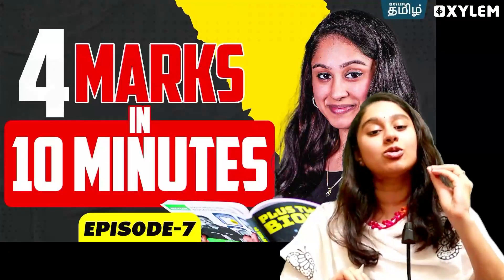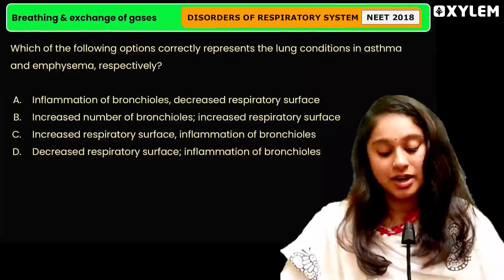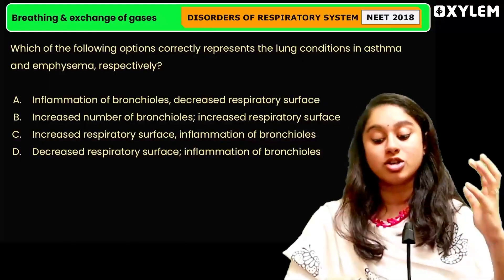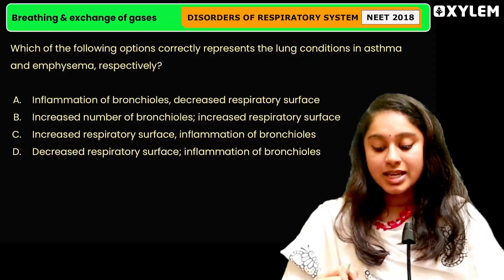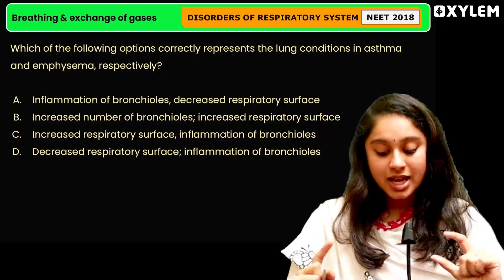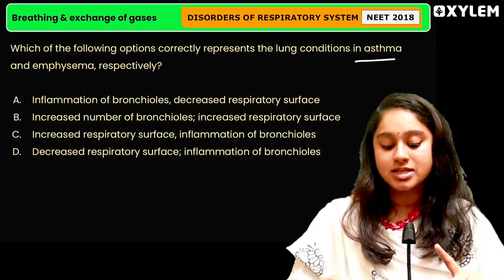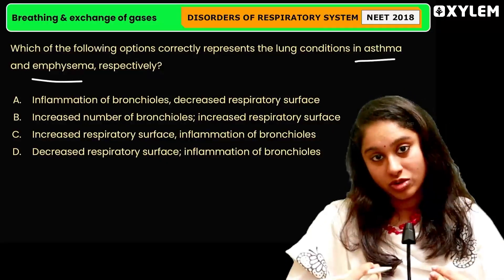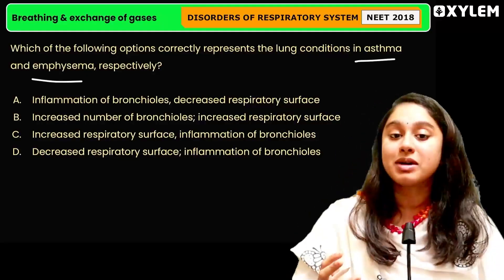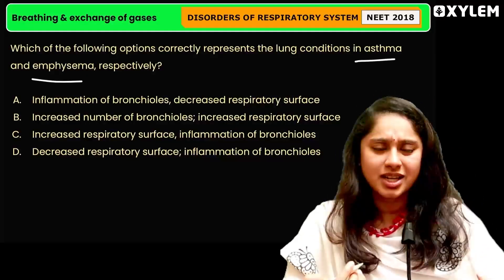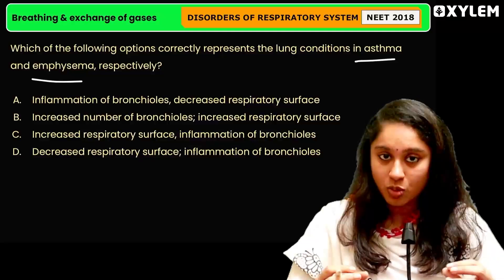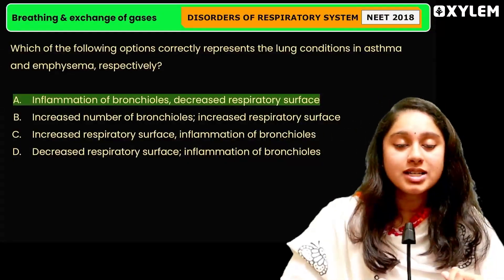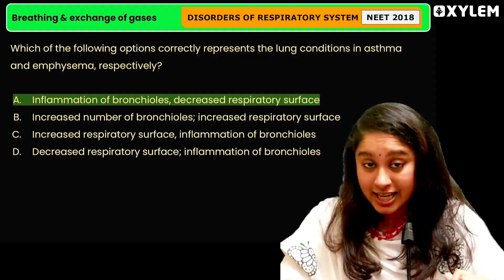So, 4 PYQs — let's look at the answers. Starting off with our disorders of the respiratory system question: what lung condition correctly represents asthma and emphysema? Asthma involves allergy causing bronchioles to inflame, and emphysema involves cigarette smoking causing alveolar walls to be damaged, leading to a decrease in respiratory surface. So, clear-cut, option A is the correct answer.